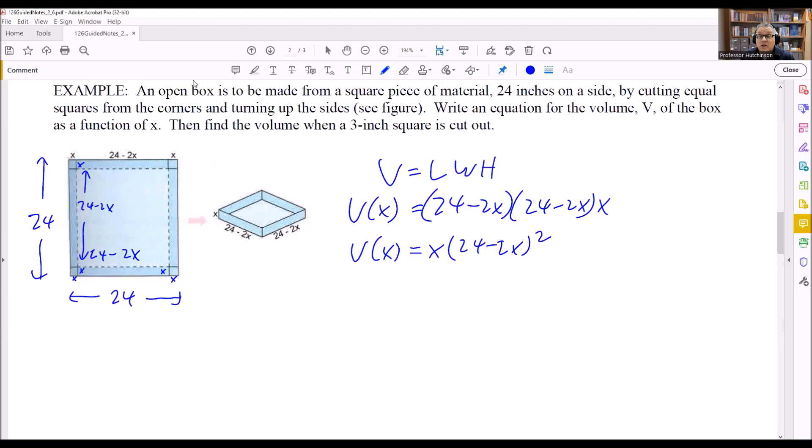Now it says the second one here, it says then find the volume when a 3-inch square is cut out. Now that means that your x value should be 3. So this right here is your x value. So now I want to find V of 3 and I'm going to put 3 in to this one. So I'll put 3 in for all of the x's there.